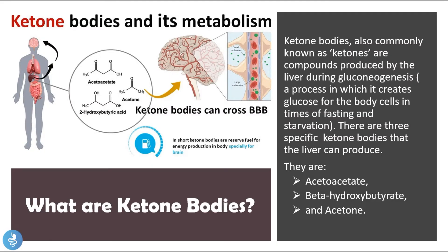Before we get into the specifics of diabetic ketoacidosis, let's take a closer look at what ketone bodies are. Ketone bodies are also commonly known as ketones, and are compounds produced by the liver during a process called gluconeogenesis, which is a process in which the liver creates glucose for the body cells in times of fasting and starvation.